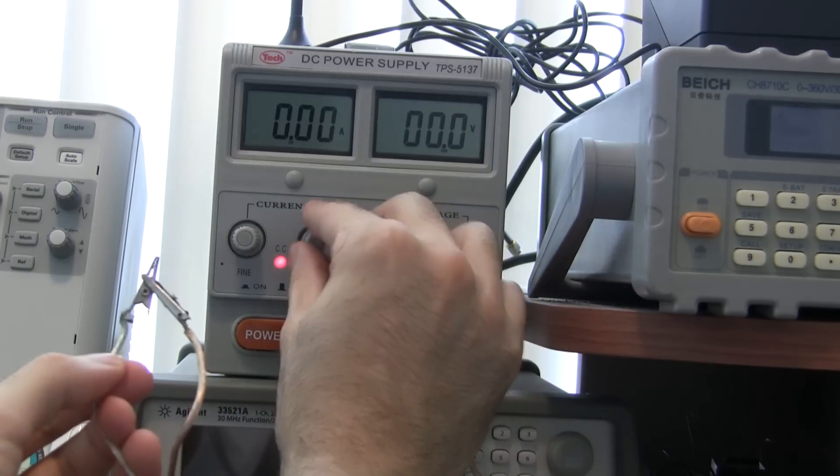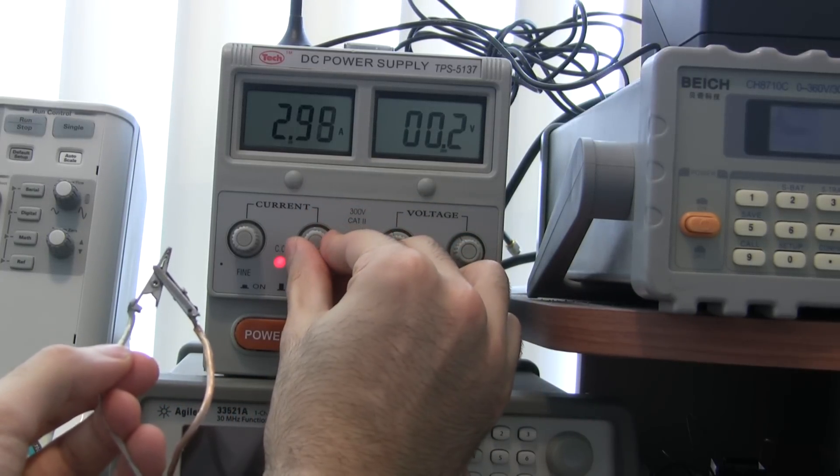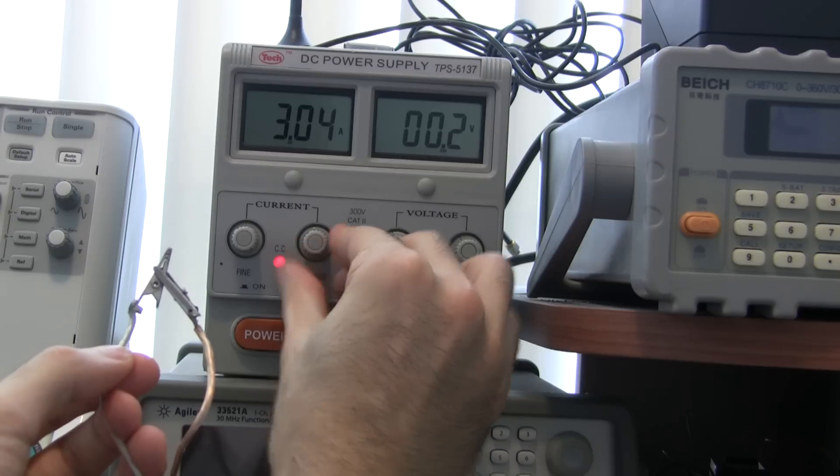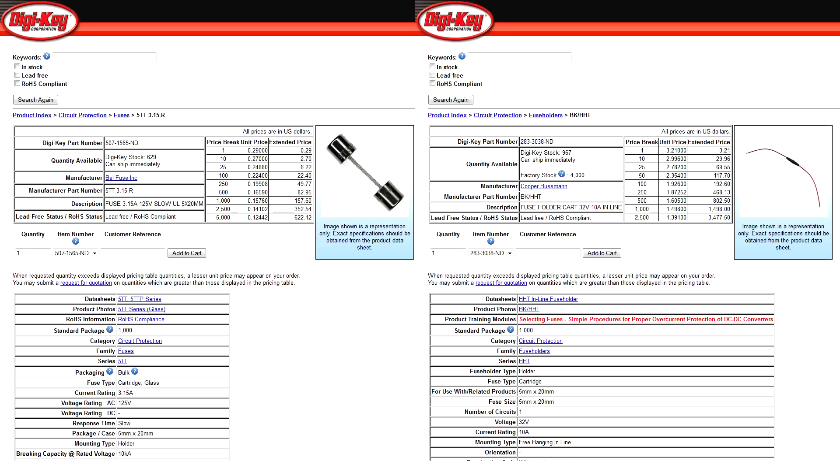First, I'm going to set my current limiting power supply to a 3 amp limit. That way things can get hot, but they probably won't catch fire. If you don't have a current limiting power supply, consider using a 3 amp fuse and fuse holder like these. Just put it in series with the positive side of your battery.